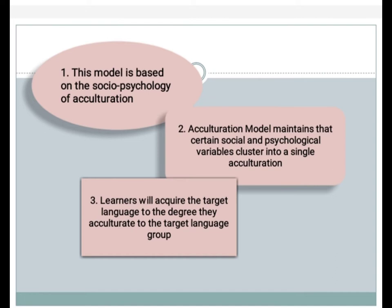The acculturation model contends that certain social and psychological variables cluster into a single variable: acculturation. Acculturation means the process by which a human being acquires the culture of a particular society. Learners will acquire the target language to the degree they acculturate to the target language group.